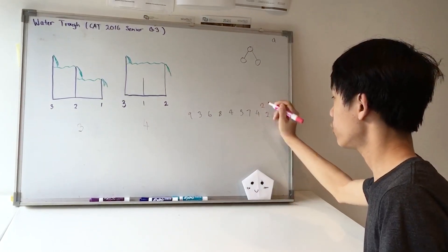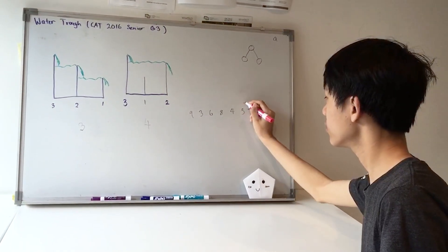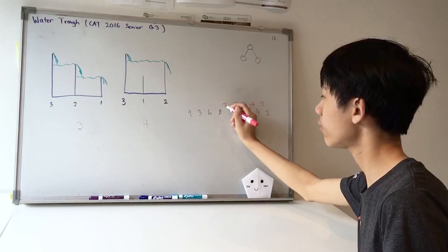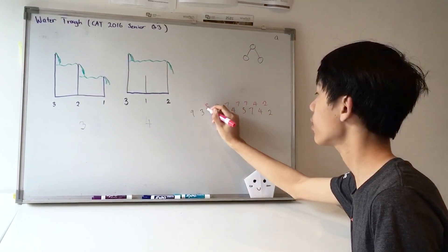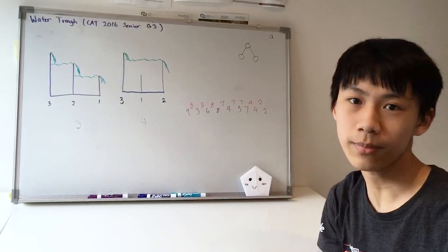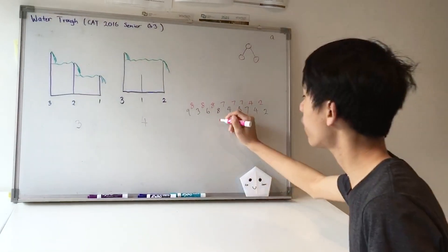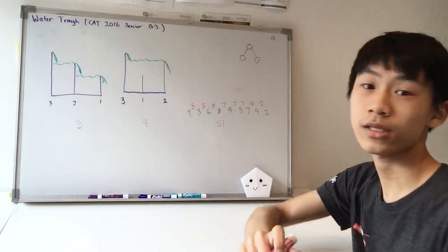From the right we have 2 metres, 4 metres, 7 metres, 7 metres, 7 metres, 8 metres, 8 metres and 8 metres. If we add all of these numbers up, we get 51 cubic metres, which is our answer.